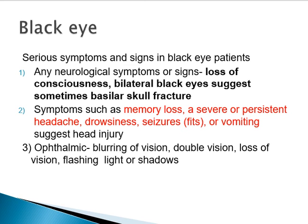Whenever you see a patient with black eyes, the most important thing is to rule out any neurological symptoms or signs, such as history of loss of consciousness, memory loss, severe persistent headaches, drowsiness, seizures, or vomiting — these suggest a significant head injury. Bilateral black eyes without any obvious injuries around the eyes suggest basilar skull fracture. In these patients, it is very important to get a CT brain to rule out any intracranial or extracranial bleeds.